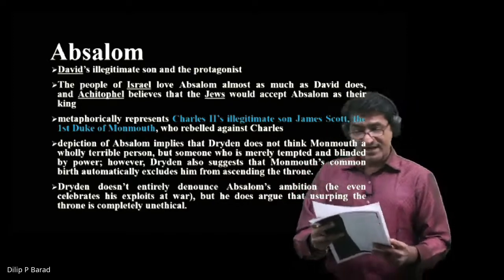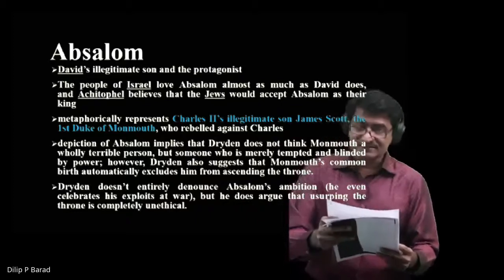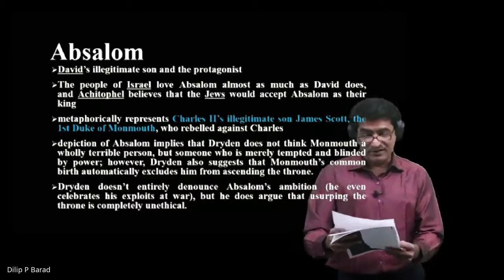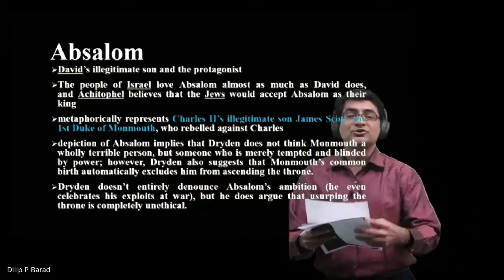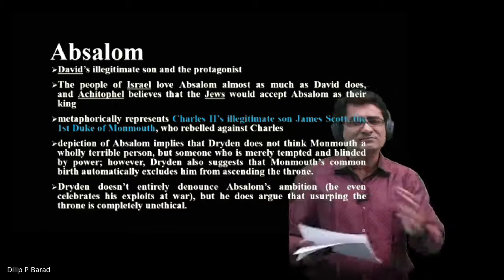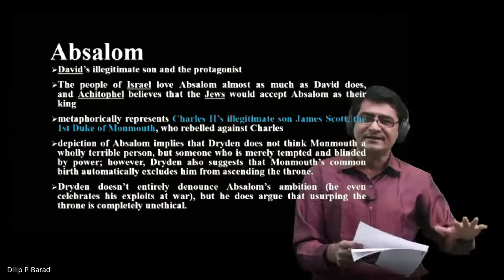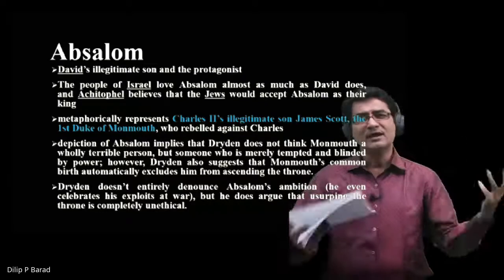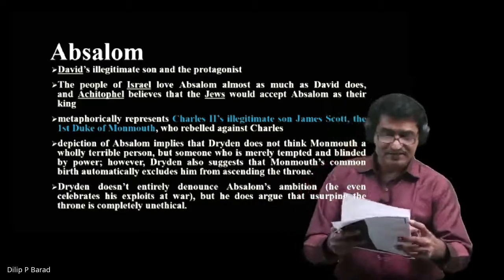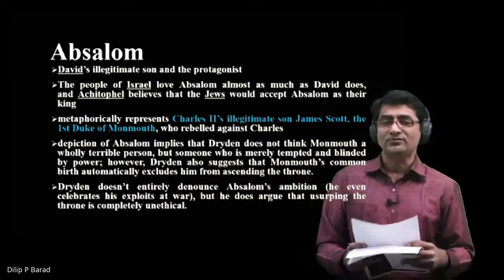Absalom agrees to rebel against David, and as he travels Israel in a procession with Achitophel, Absalom conforms to Achitophel's deceitful ways. They mistake David's mercy for weakness, but David asserts his power and effectively shuts down Absalom's rebellion. Dryden never tells us what becomes of Absalom — that story is left incomplete.